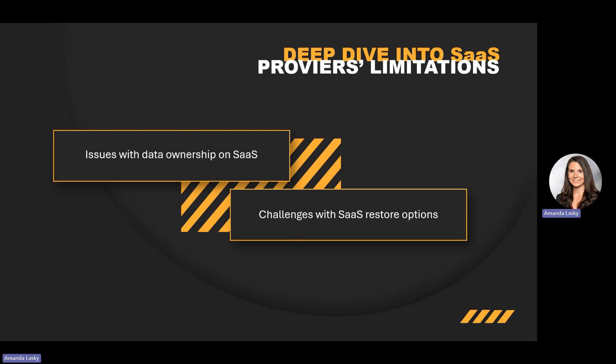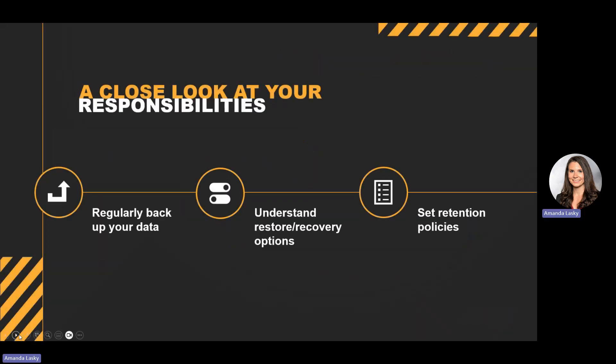It's important to understand these limitations and consider third-party backup solutions that can help you tackle them. Here are some important steps you should take to ensure the safety of your data. Number one, regularly backup your data — create regular backups as they act as your safety net. Don't rely solely on your provider; take charge of your data security. You also want to understand restore and recovery options. We recommend having a plan in place for how you'll recover data when needed. You will want to know your recovery point objectives, or RPO, and recovery time objectives, or RTO.